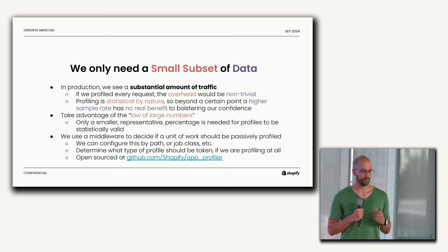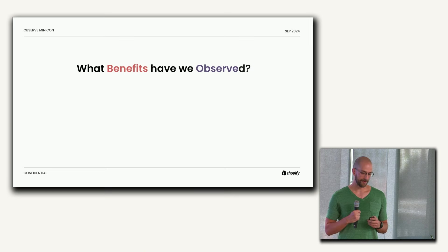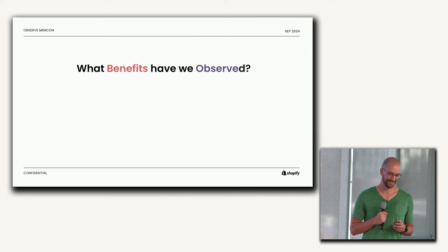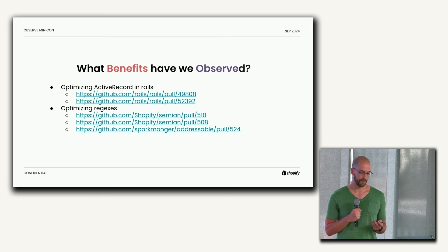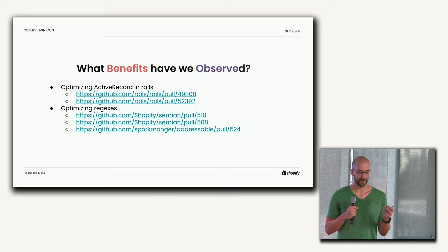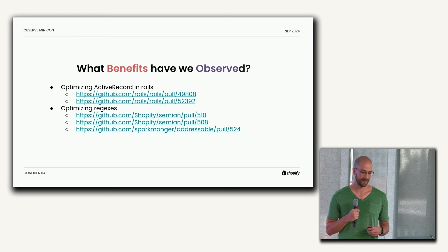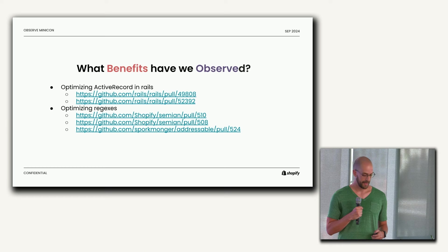So, what are the benefits that we've observed with profiling? Here are some examples of wins in some common open source libraries. This is one of the awesome benefits you get from aggregating profiles — you can find an optimization opportunity in one gem dependency, fix it, upstream it, and then everyone else using that gem gets the benefit. There are, of course, more wins than we can list here in private repos, but these are just some examples that developers who have used the profiling tooling have come to us with. And that's it.